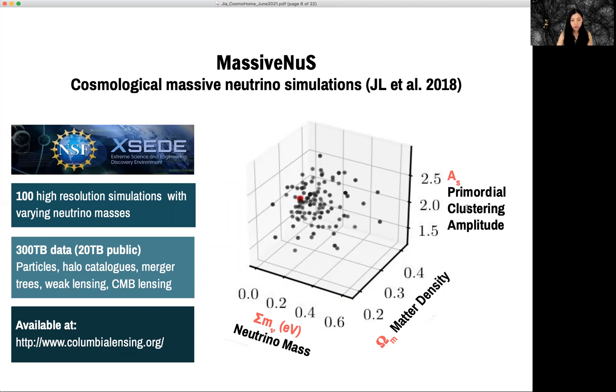So on the right-hand side plot, I am showing the parameter space of all the simulations. There are 100 black dots on this plot and each of them has a different parameter sets that varies AS, the primordial clustering amplitude, omega m, and the neutrino mass.